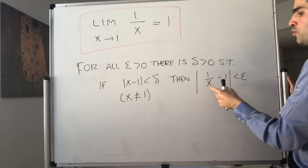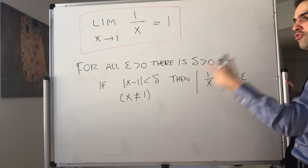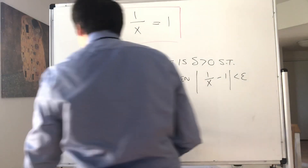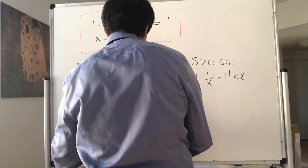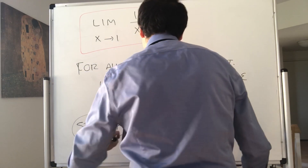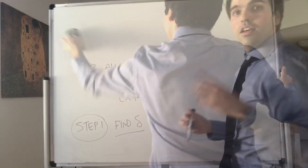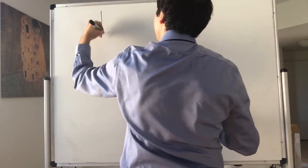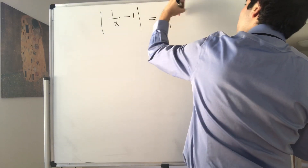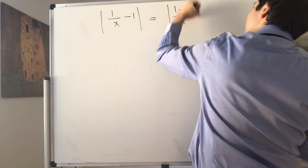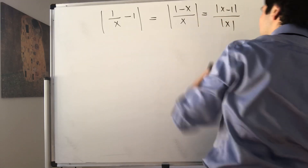As usual, you start with the conclusion and try to fish out a delta from that. So step one: find delta. Let's write out the difference. Consider |1/x − 1|, and that becomes |1 − x| / |x|, which is just |x − 1| / |x|.